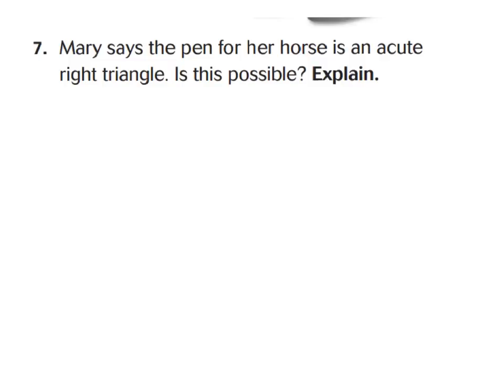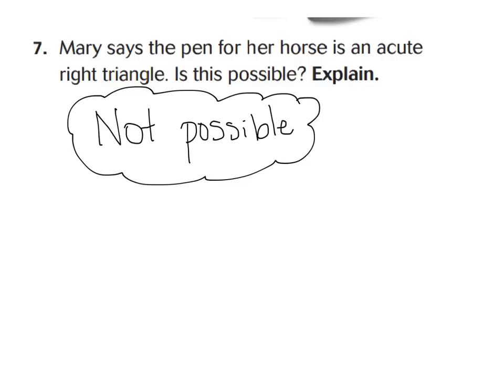Let's take a look at question seven. It says Mary says the pen for her horse is an acute right triangle. Is this possible? Explain why. Go ahead and press pause to write your answer down. For this answer, you should have said that it is not possible. A triangle can only be acute, obtuse, or right — it can't be acute and right at the same time. All right triangles have a right angle and the other two are acute, so we would only call this a right triangle, not an acute right triangle.